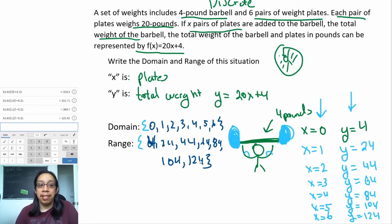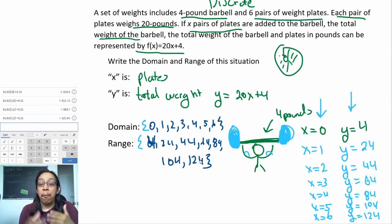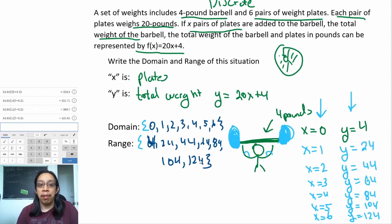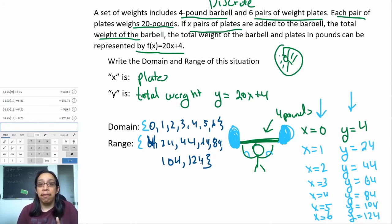Remind yourself what domain and range are, and look for hints in the problem. Then ask yourself: is it discrete or continuous? Continuous deals with time; discrete is whole numbers of objects. Once you get through those three questions, the tough part is establishing the actual work to get from domain to range—sometimes they give you an equation, sometimes just a general idea of values. I hope you learned something new today; leave questions in the comments, give the video a like, and subscribe for more Algebra 1 videos!